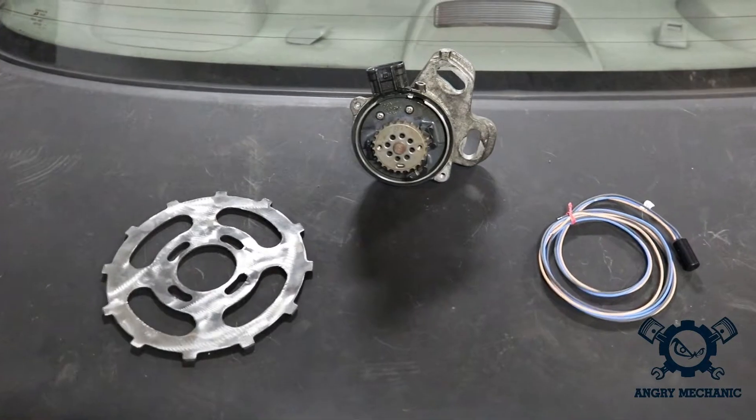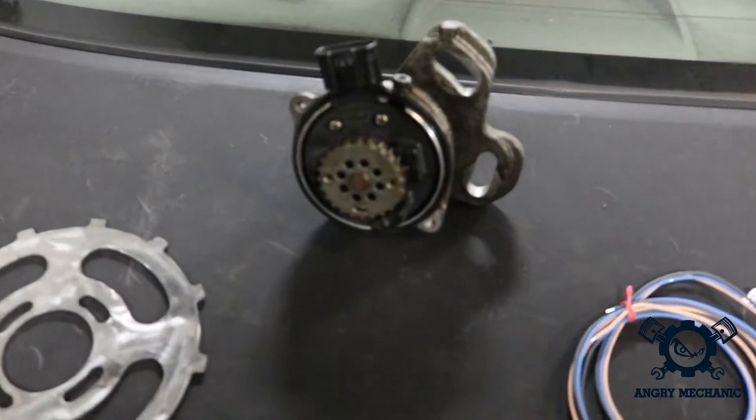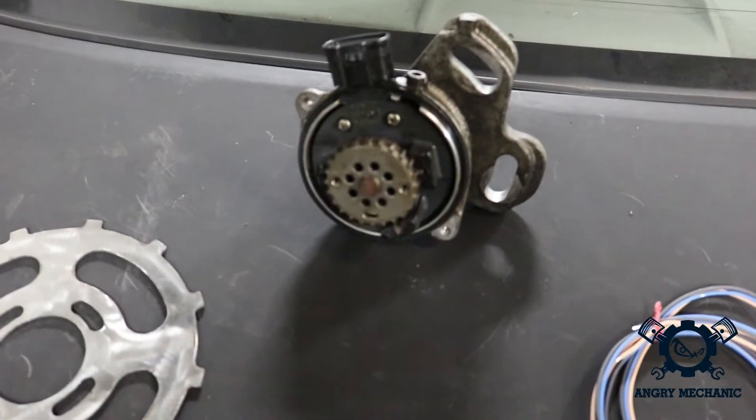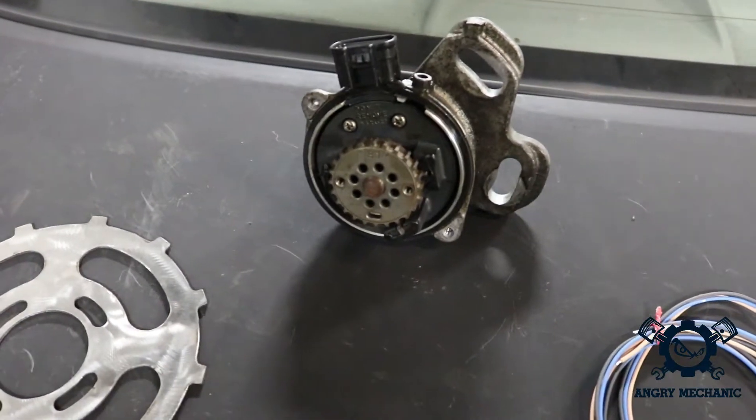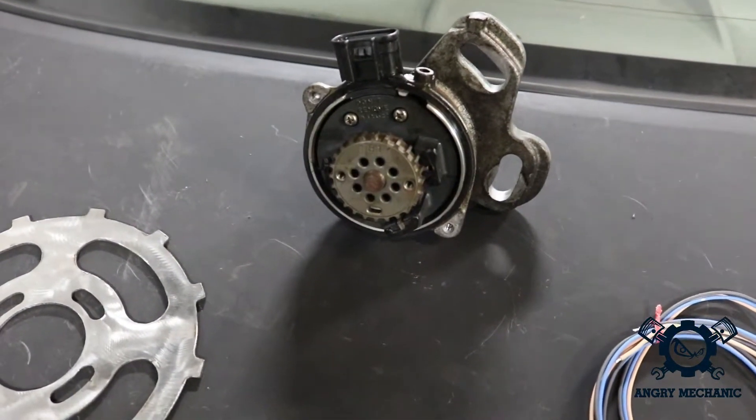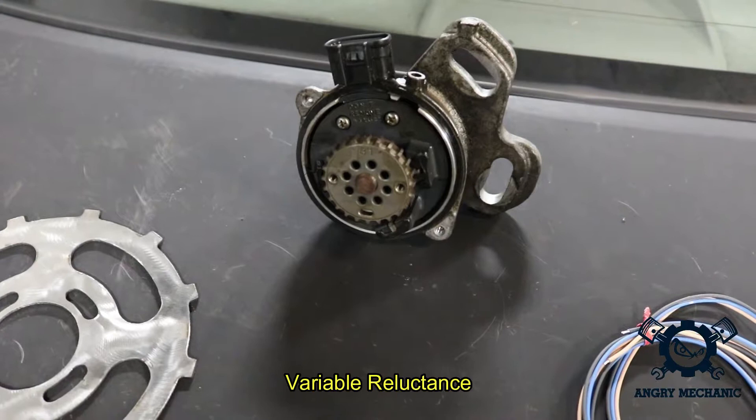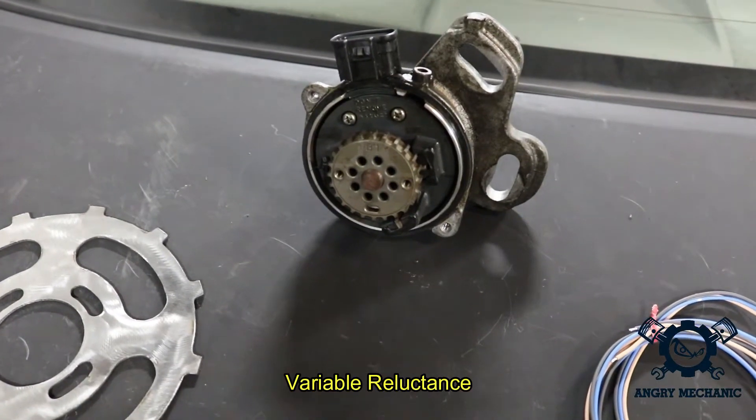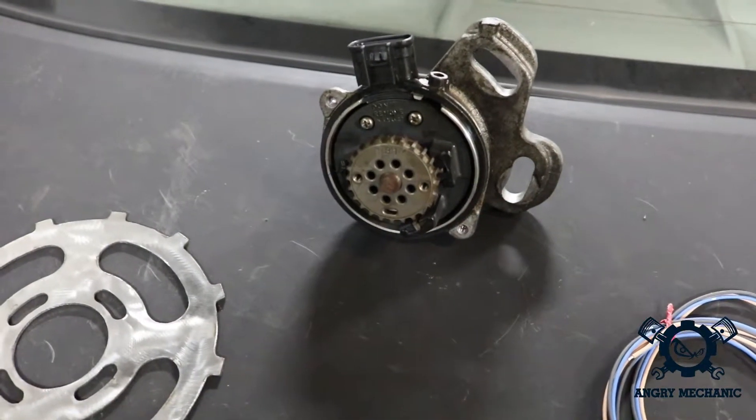First you have what we use here on the distributor. This one uses a magnetic type pickup, or some people refer to it as a VR type pickup. Variable reluctance is what it stands for. I just refer to it as magnetic for simplicity.